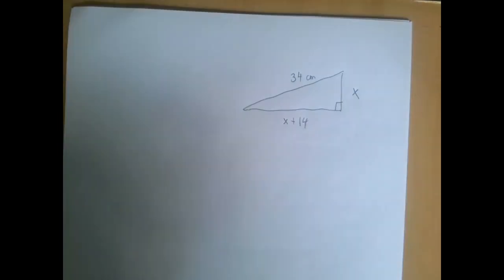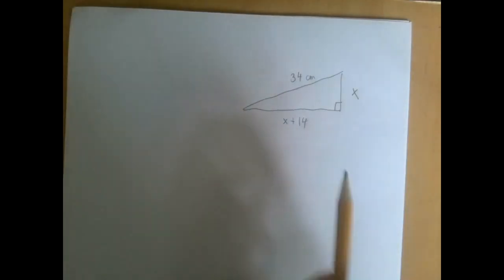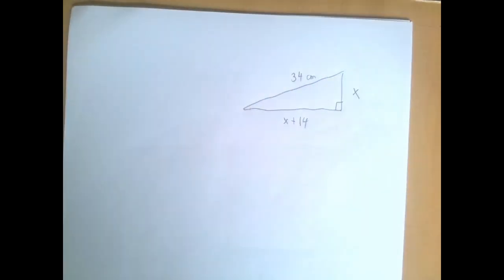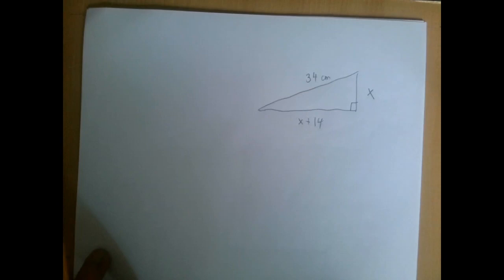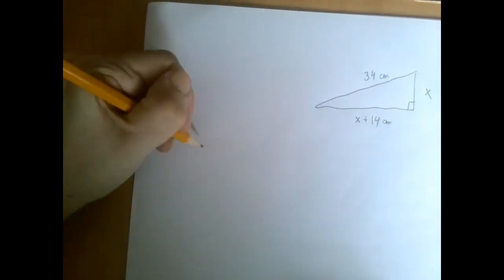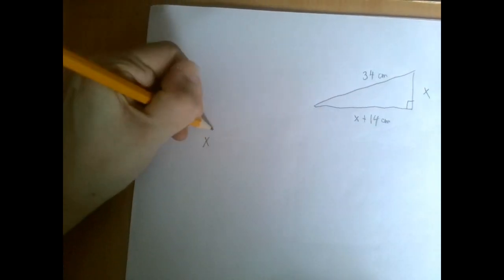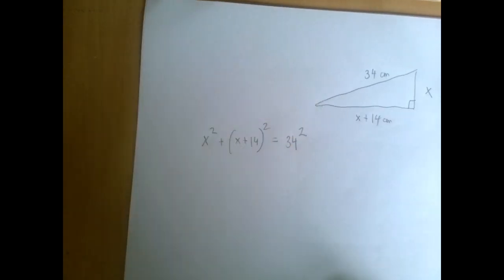Neither of them is the hypotenuse, so the two shorter sides are x and x plus 14. We're going to state the Pythagorean theorem for this triangle: the two shorter sides squared then added is x squared plus (x plus 14) squared equals 34 squared.